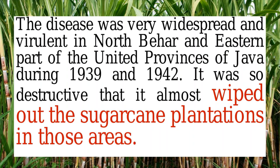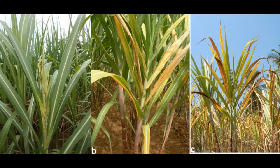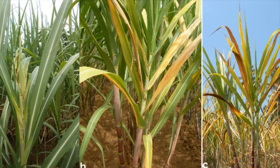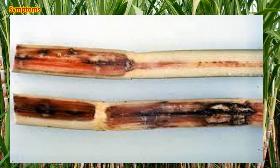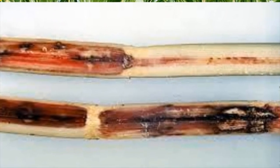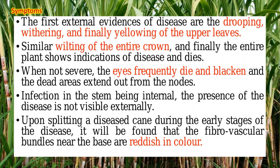Coming to the symptoms of this disease, the symptoms are seen in all aerial parts of the plant. Mainly, drooping, withering, and yellowing of the upper leaves occurs initially. A wilting of the entire crown of the sugarcane plant leads to the death of the plant. In severe conditions, the entire sugarcane turns dark red in color, rendering it useless for any purpose.